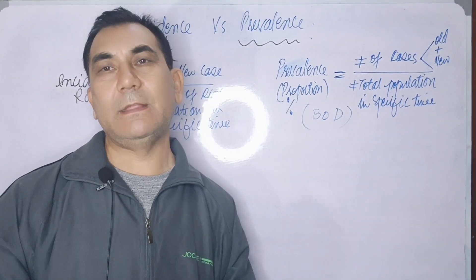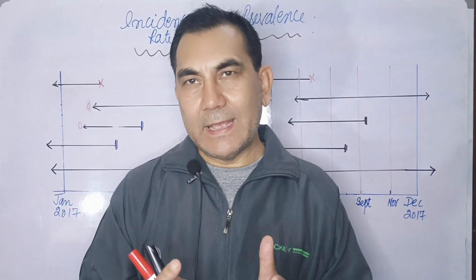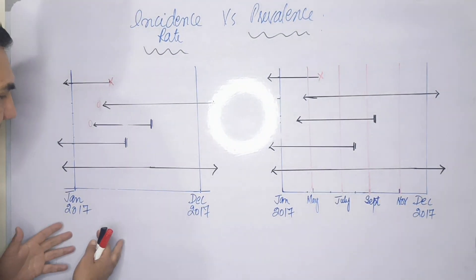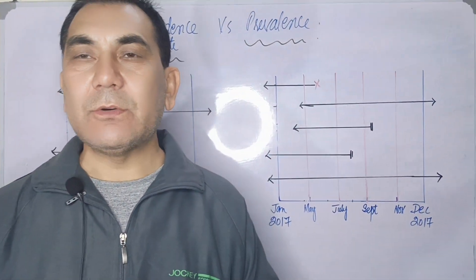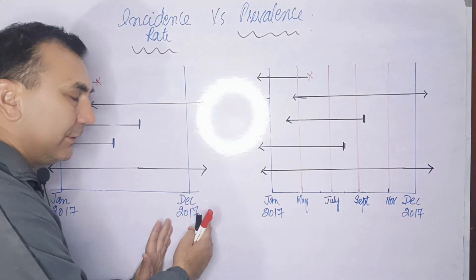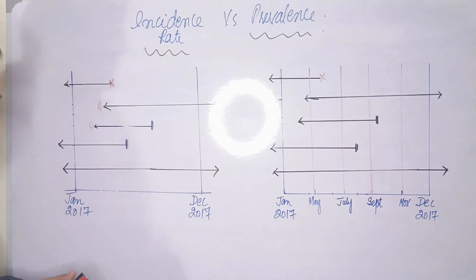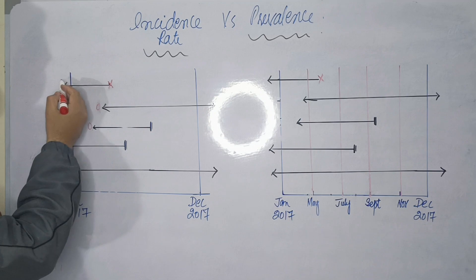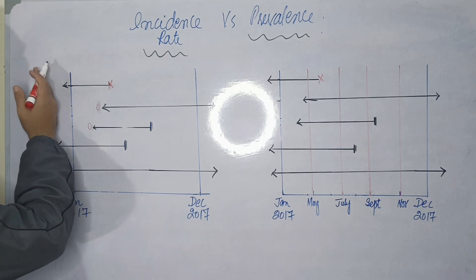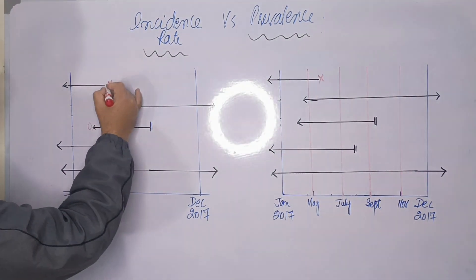Let's clarify the concept of incidence and prevalence through an example. Suppose we observe the incidence rate of a disease in the year 2017, from January to December, and there are five cases. The first case had its onset before 2017 — it occurred in 2016 — and when it reached around May or July of 2017, the patient died.